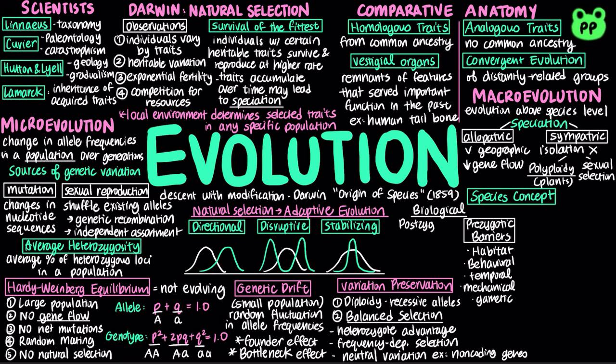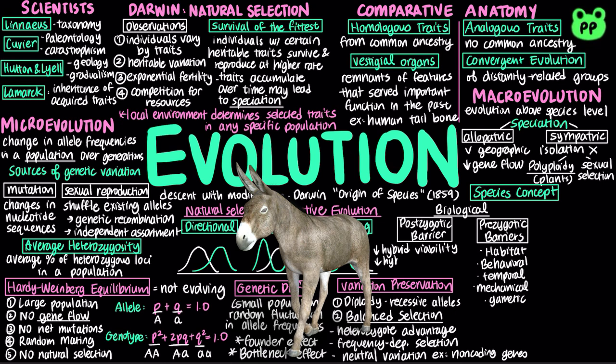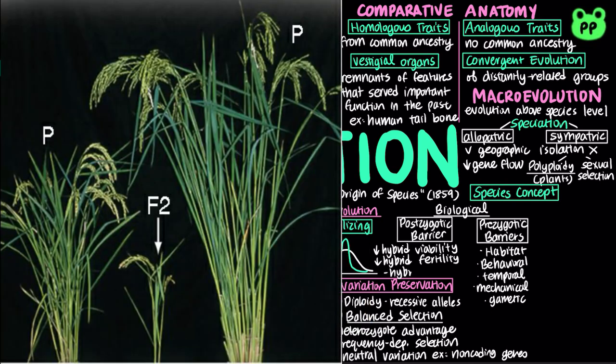Postzygotic barriers prevent the hybrid zygote from developing into a viable, fertile adult. Reduced hybrid viability refers to weak offspring that die off not long after birth. Reduced hybrid fertility refers to sterile offspring, such as a mule, which is a sterile hybrid offspring between horse and donkey. In hybrid breakdown, hybrids may be fertile and viable in the first generation, but the following generation may be weak or sterile.